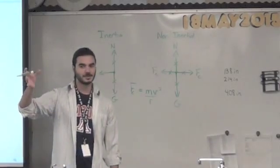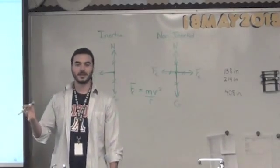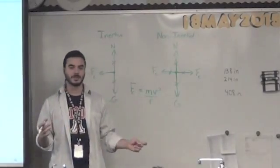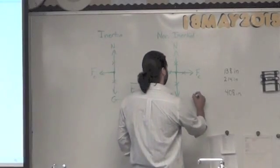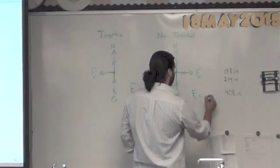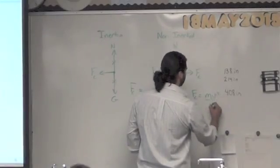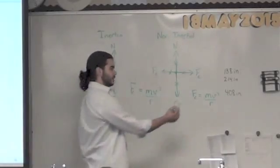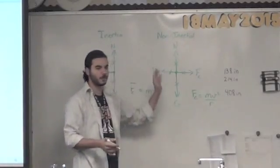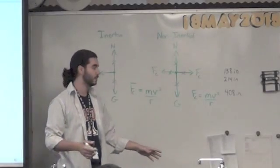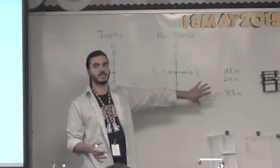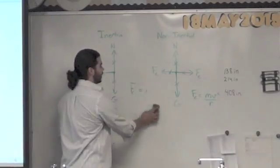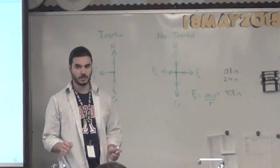Wouldn't the formula for centrifugal force be the same? Yes, very good. Because Newton's third law of motion says that for every action there's an equal and opposite reaction, we know these forces have to be equal and opposite — so it's the same formula. If you define towards the inside as positive and towards the outside as negative, centrifugal force would be negative mv²/r, but we're not worrying about direction, just magnitude.